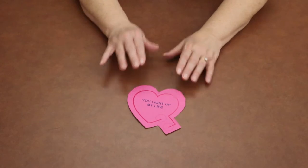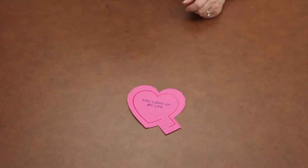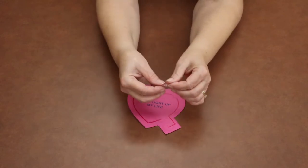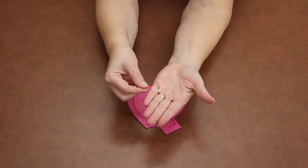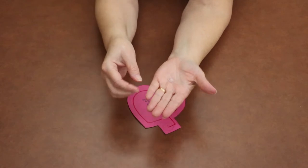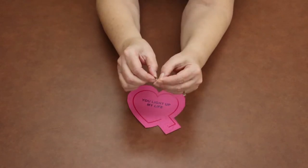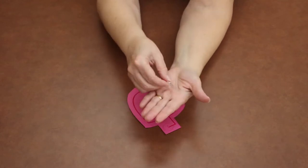Alright, so then you're going to have the start of your valentine. The next step that you're going to do is you're going to take one of your light bulbs. So we did give you two light bulbs because sometimes they don't always work. So if you have one that doesn't work, now you've got a spare.